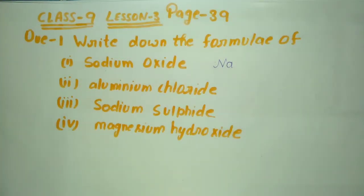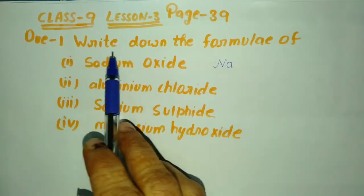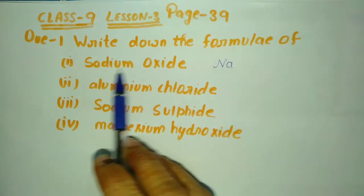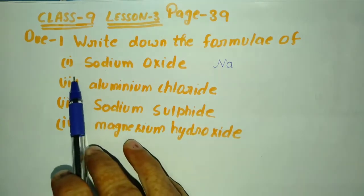Hello friends, you are welcome in my channel Preparation for Future. Today's topic is for ninth class, lesson three. Question one: write down the formula of sodium oxide, aluminum chloride, sodium sulfide, and magnesium hydroxide. So let's start.